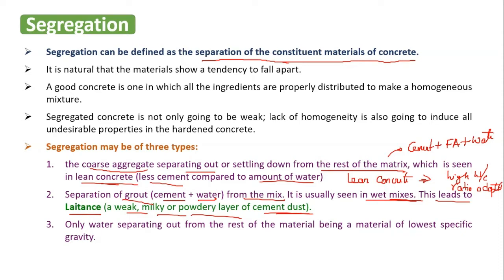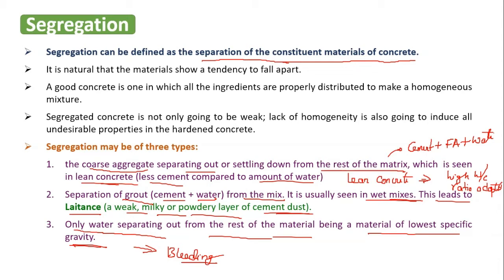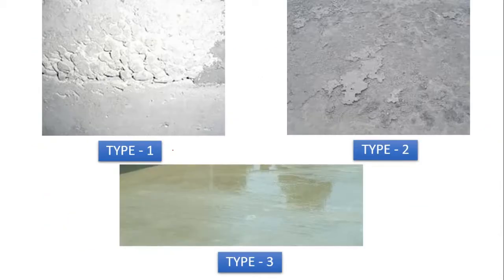The third type is only water separating out from the rest of the materials — cement, fine aggregate, and coarse aggregate. Only water separates out, due to its lower specific gravity. This is what we call bleeding. Bleeding is nothing but separation of water from the remaining materials. You can say that bleeding is a kind of segregation.